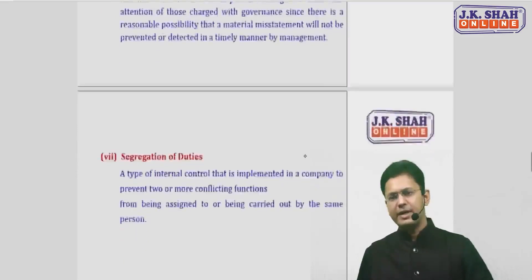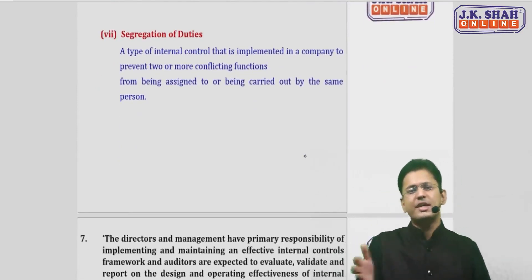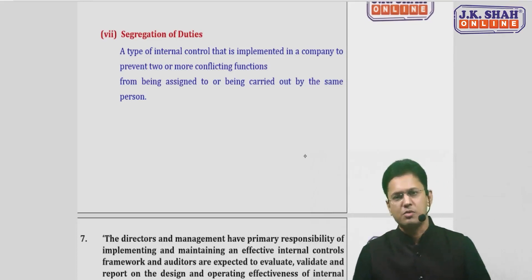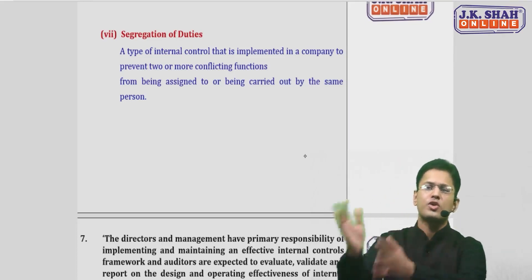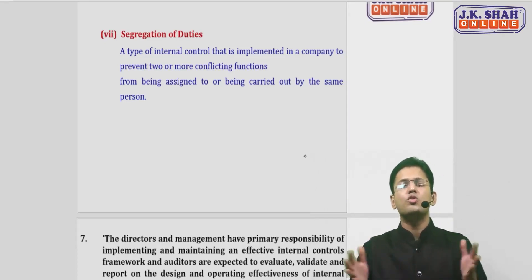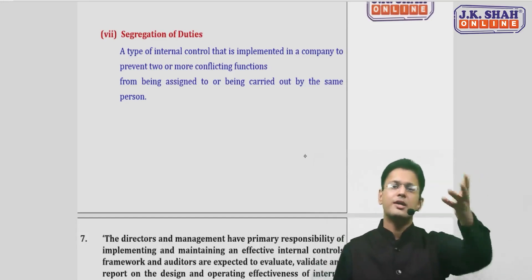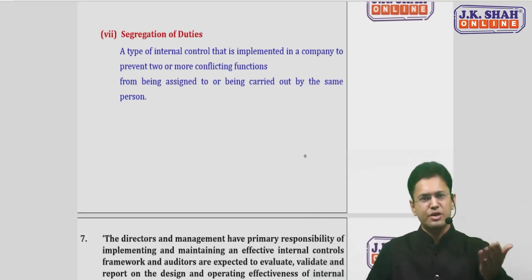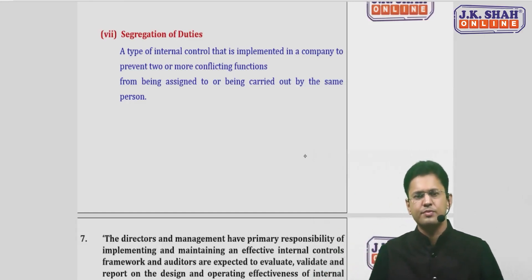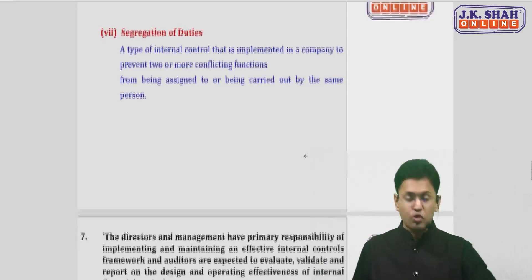The last definition is segregation of duties. It means no one person should handle more than one responsibility, or no one person should handle conflicting responsibilities — the one who initiates a transaction should not authorize the same. It is a type of control implemented by the organization to prevent two or more conflicting functions from being assigned to or carried out by the same person. This is covered in both Audit and EIS.